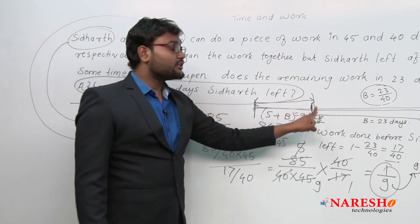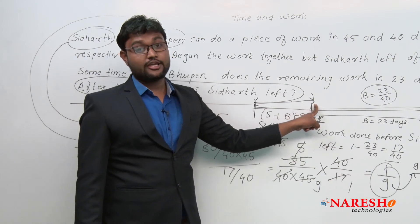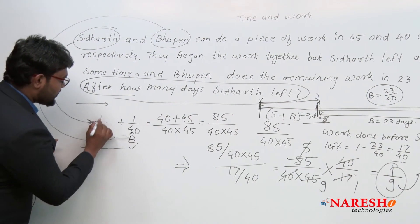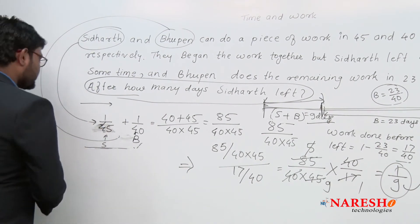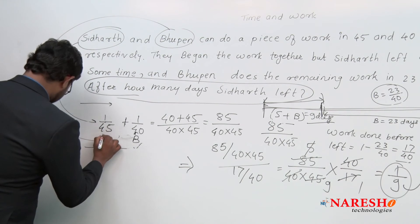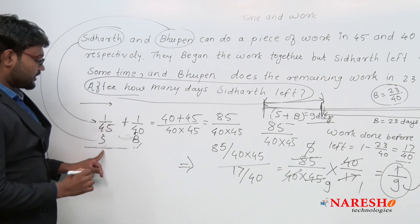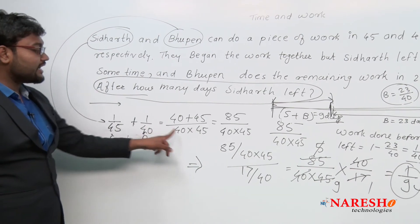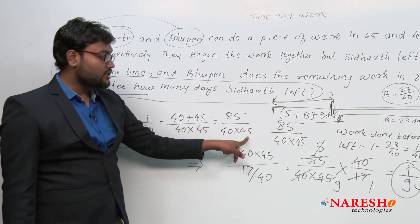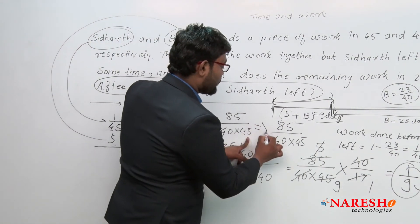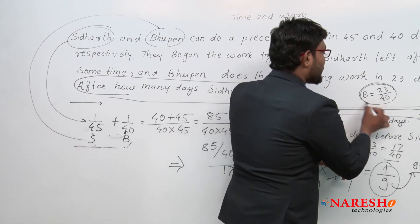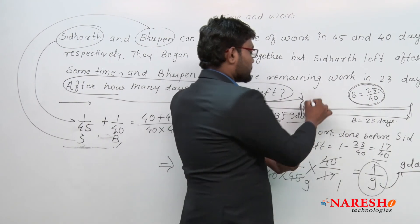The time period where both Bhupen and Siddhartha were working together — their combined one day's work is 1/45 + 1/40 = 85/(40 × 45).